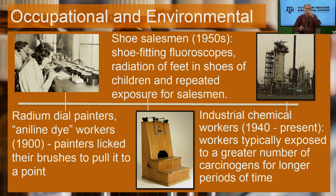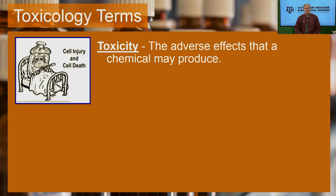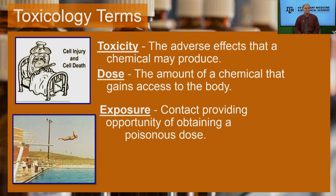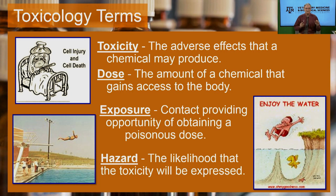Industrial chemical workers are exposed to things for a long time too. Dose makes the poison — it's the amount of exposure you're getting, either in time or in concentration. Toxicity is the adverse effects a chemical may produce. The dose is the amount of chemical that gains access to the body. Dose is different from exposure — exposure is contact providing opportunity; it's the opportunity to get a dose, not the dose itself. This diver is about to be totally exposed to that water, but if he doesn't drink it, he will not receive a dose.